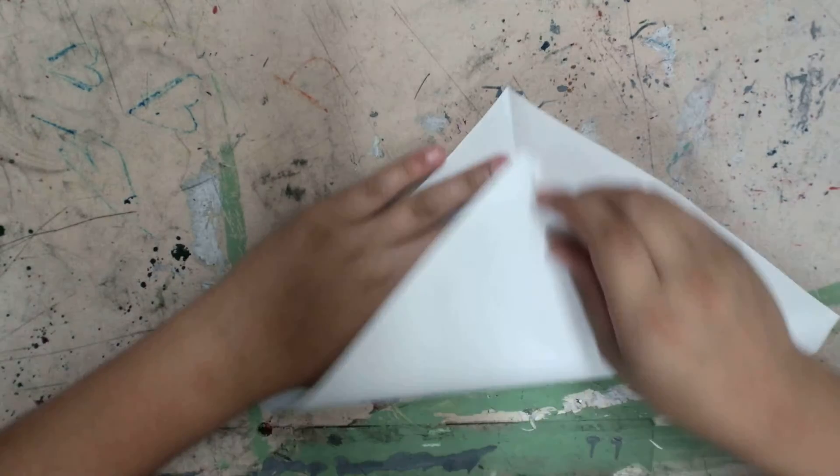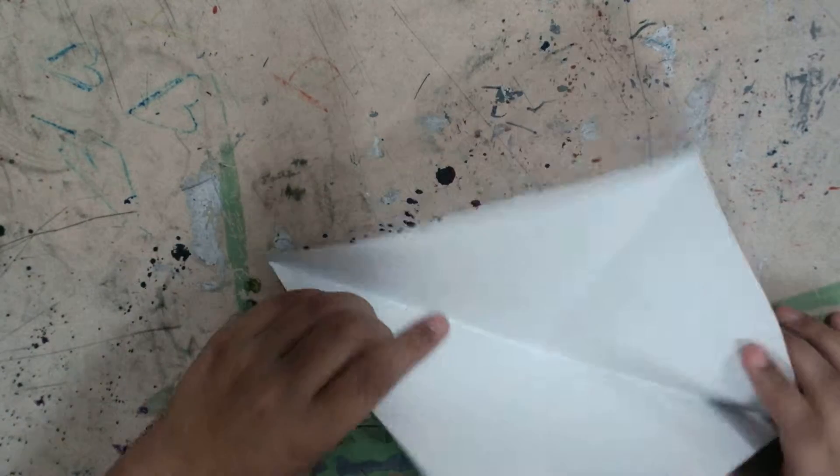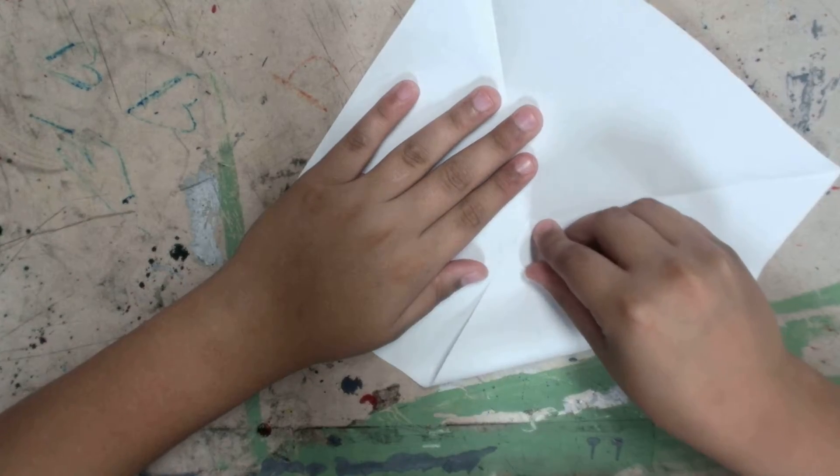Then you have this. You undo it, and fold this to the other triangle side. Then you fold the rest of it down and fold this in.